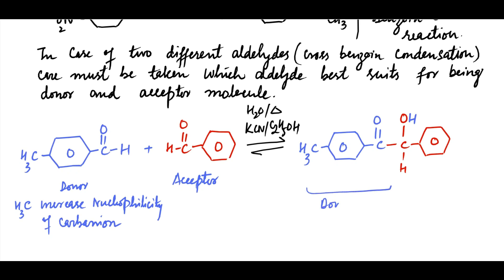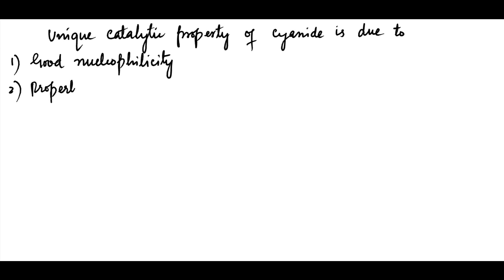Hence, this part comes from donor molecule and this from acceptor molecule. The cyanide ion is a very specific catalyst for this reaction. Unique catalytic property of cyanide is due to: cyanide is a good nucleophile, property of stabilizing carbanion, and it is a good leaving group.